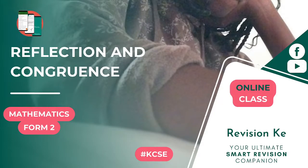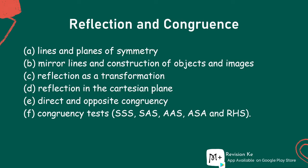Welcome back. We're going to look at reflection and congruence. By the end of this topic, you the learner should be able to: state the properties of reflection as a transformation; use the properties of reflection in construction and identification of images and objects; make geometrical deductions using reflection; apply reflection in the Cartesian plane; distinguish between direct and opposite congruence; and finally, identify congruent triangles.